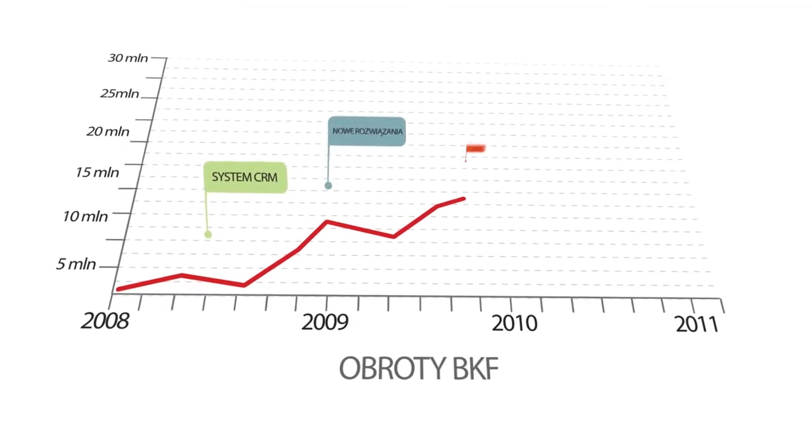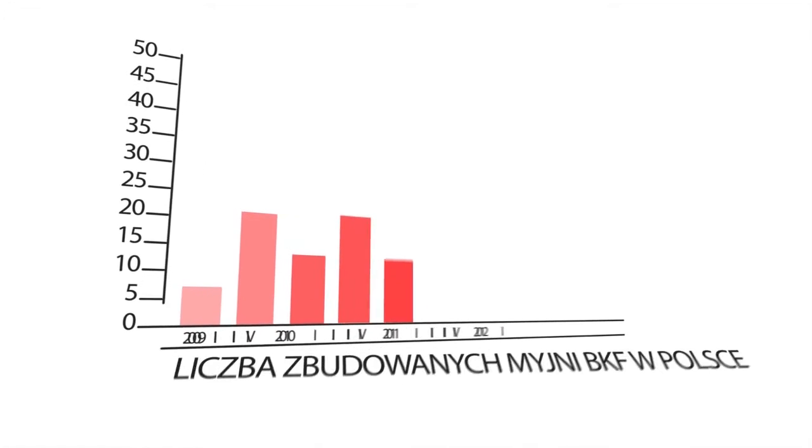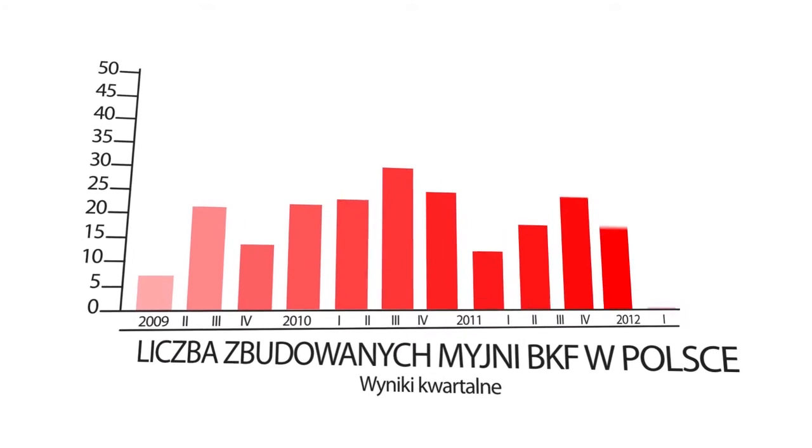Мы выбрали идеальный момент для производства автомоек, благодаря чему быстро стали лидером рынка. В настоящее время мы производим больше всех моек в стране, около 70 единиц в год.